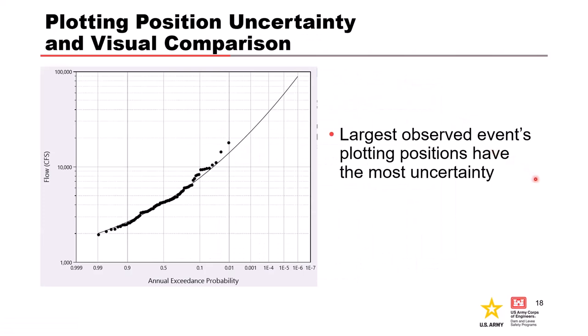Another example shows the plotting positions not matching perfectly with the analytical flow frequency curve. This demonstrates plotting position uncertainty, especially with the largest observations, which have very large plotting position uncertainty. This should be kept in mind when visually comparing plotting positions to analytical frequency curves — they're not always going to match up perfectly.